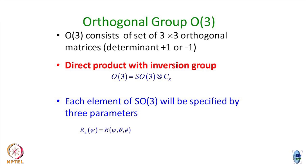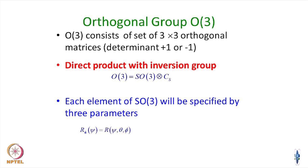You can show that O(3) is nothing but SO(3) times an inversion element — a direct product. The inversion group has an identity element and a minus-1 diagonal element. Any element of SO(3) combined with the inversion element gives you elements that belong to O(3) but not to SO(3). This is the same notation used for the descriptors.